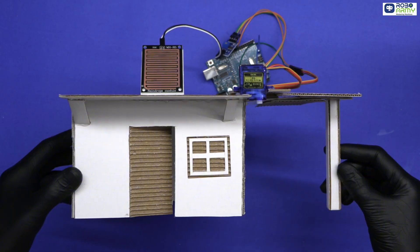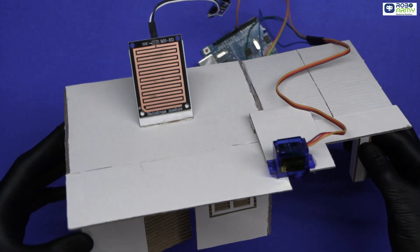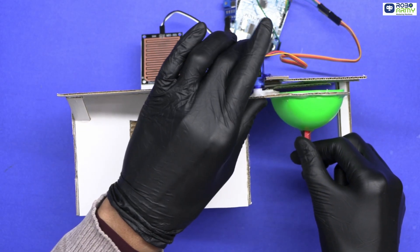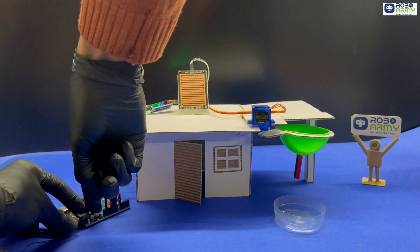Now Step 5: Mounting and testing. Mount your setup on a small cardboard house or model. Stick the rain sensor on the roof so it can sense raindrops. Attach the servo motor to the container lid or flap that will open to store water. Now power the project using 9V battery or through DC jack.